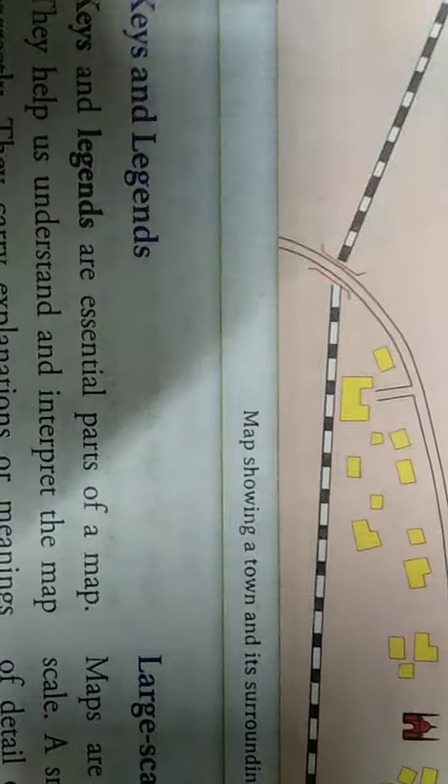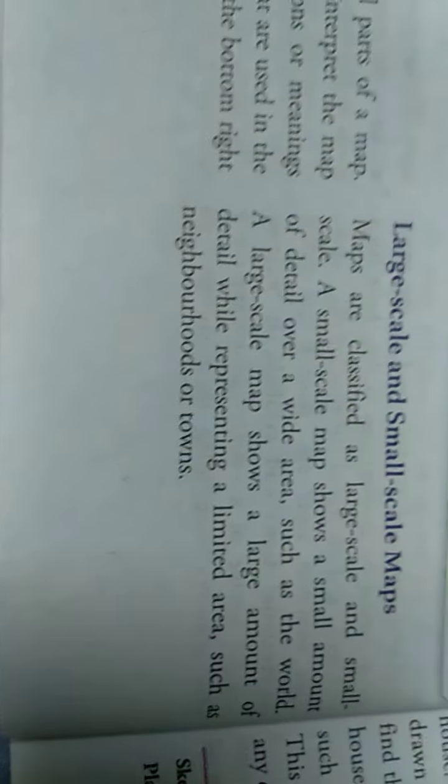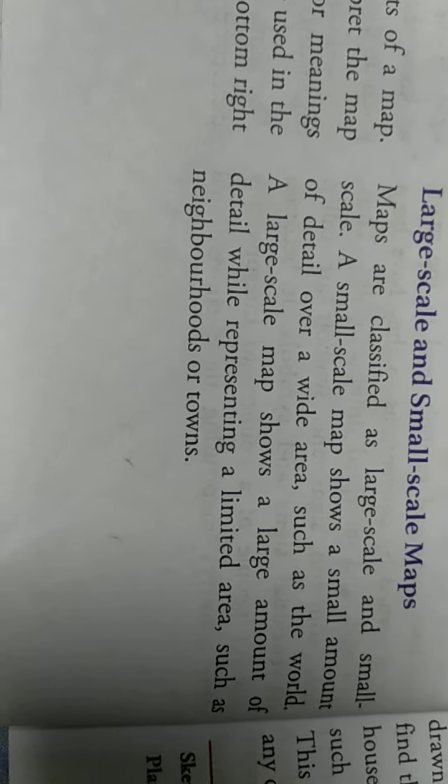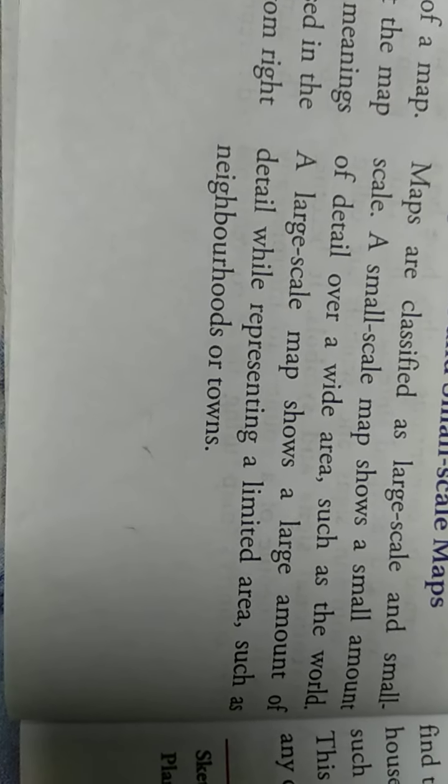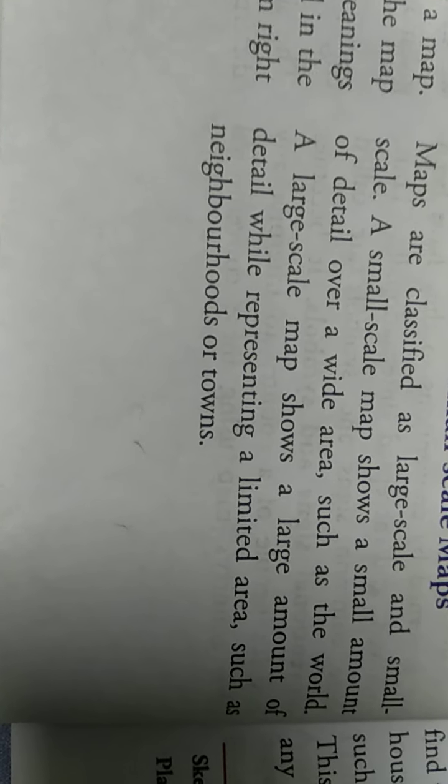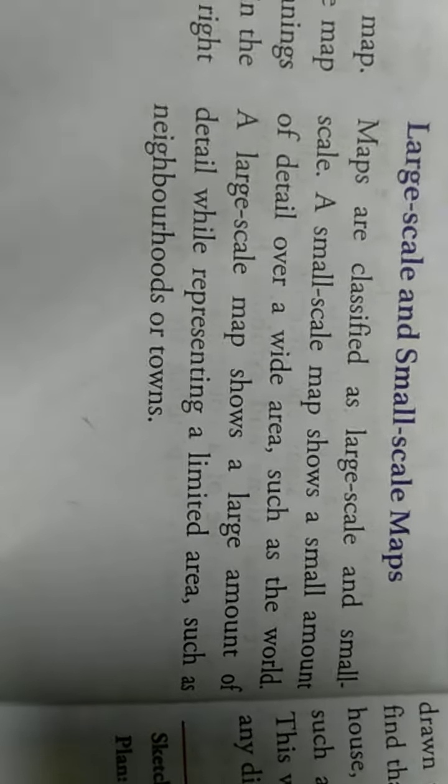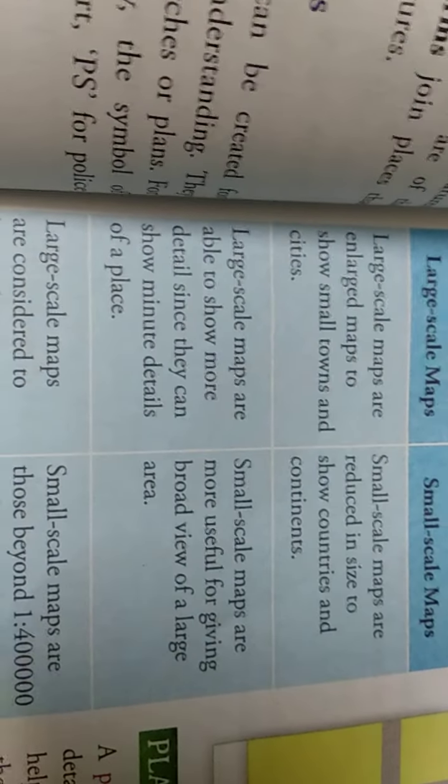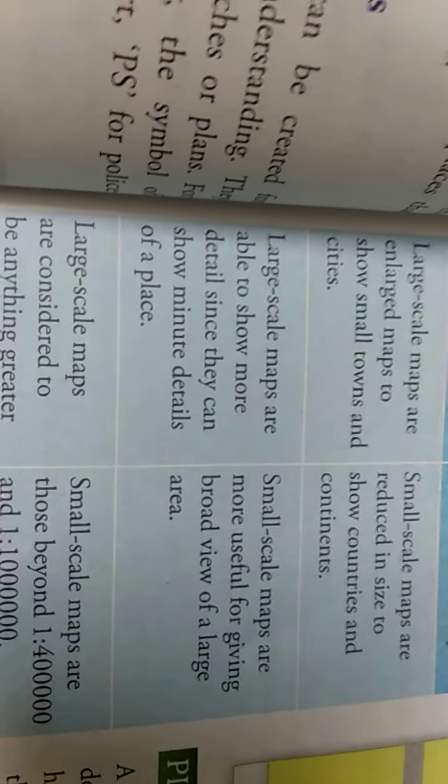Large scale and small scale maps. There are two types of maps. Small scale maps show a small amount of details over a wide area, such as the world. Large scale maps show a large amount of details about a limited area, such as neighborhoods and towns.